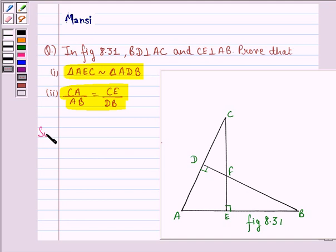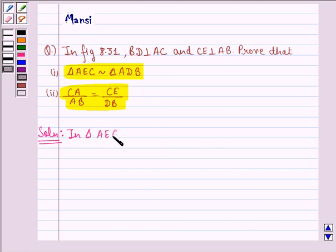Let us start with the solution to this question. First of all we have to show that triangle AEC is similar to triangle ADB. So in triangle AEC and triangle ADB.